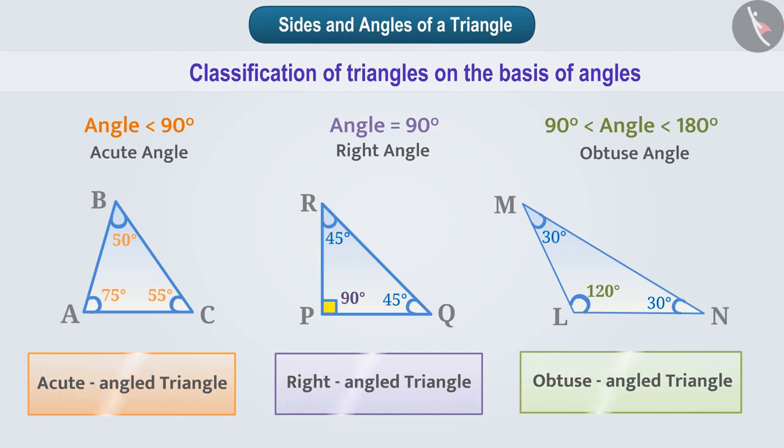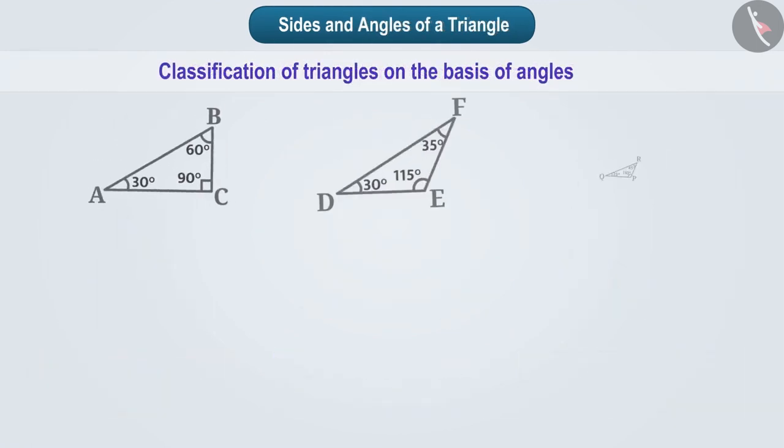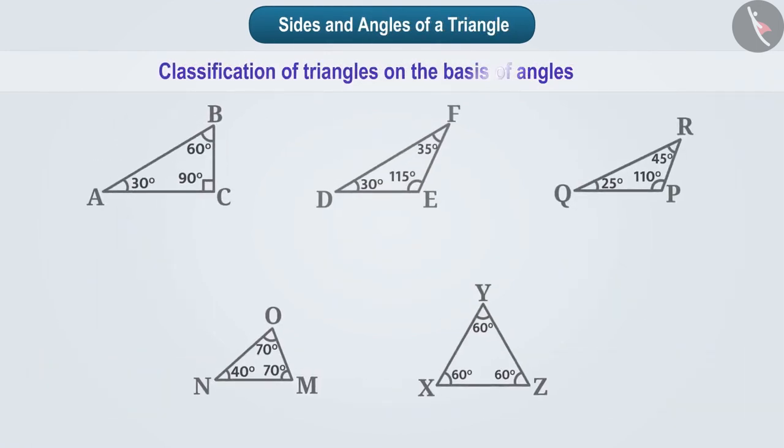Now, will you be able to classify the given triangles based on angles? Try it. Let us tell you. Triangle ABC has a right angle, so it is a right angled triangle.